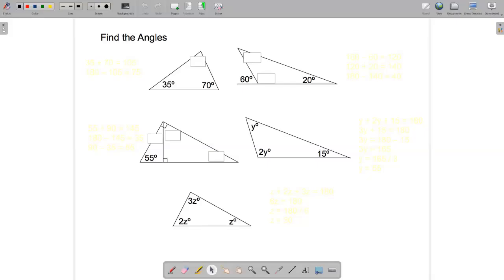In this video I'll go through some examples of finding angles. Let's start with this triangle up here. We have a 35 degree angle, a 70 degree angle and an unknown angle.